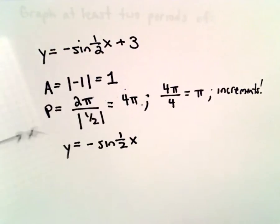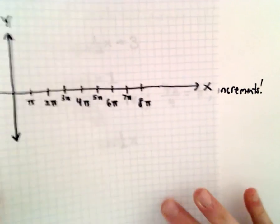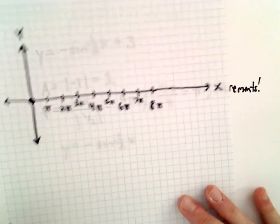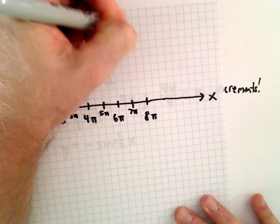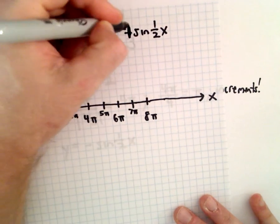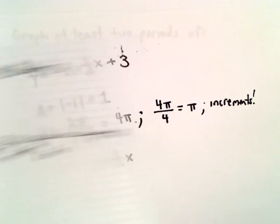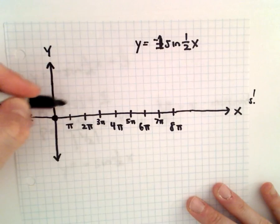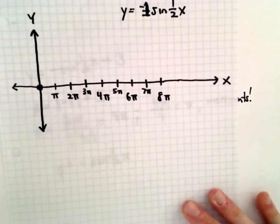So if we substitute in x equals zero, we'll get sine of zero, which is zero. The negative won't matter. So at zero, we're sitting at zero. So again, I'm going to graph y equals negative sine of 1 half x. Well, normally, sine increases, but since we have the negative out front, it's going to decrease.